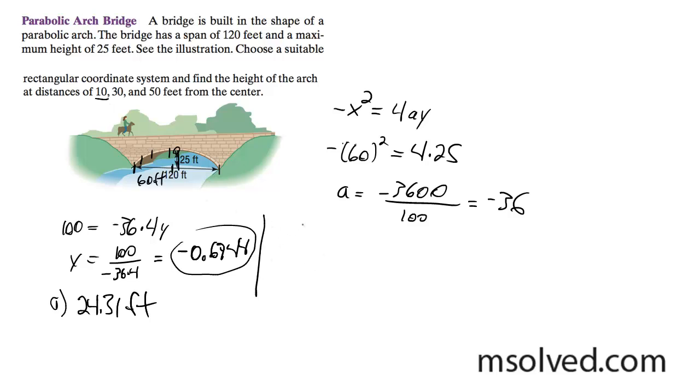So for 30 feet out now, it's going to be 900 is equal to negative 36 times 4y. So y is equal to, I know what 36 times 4 is now, that's 144, and this gives us negative 6.25, and then you add that to 25. That gets us 17.25 feet.